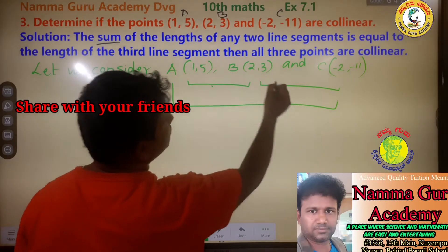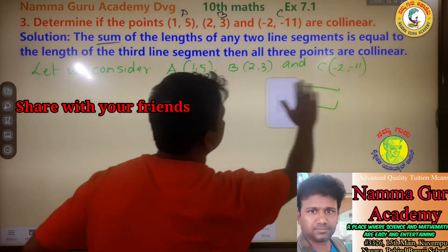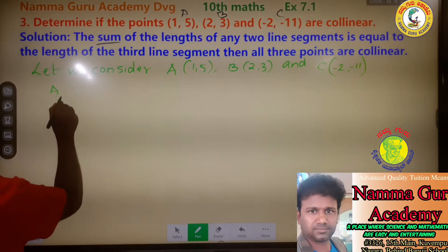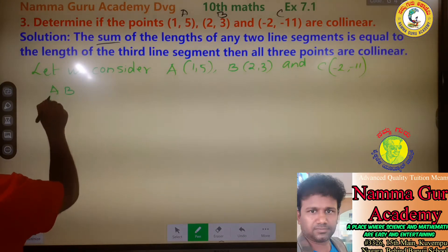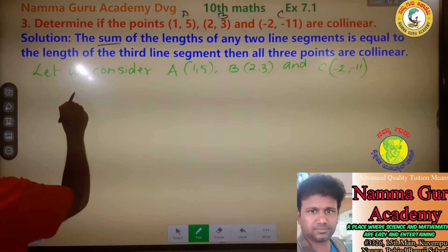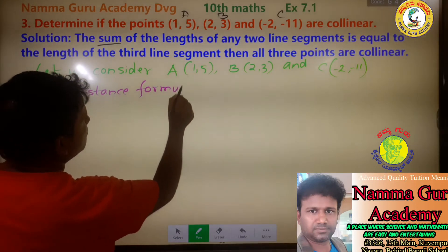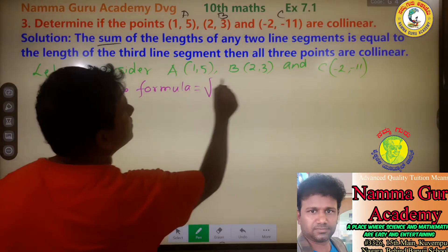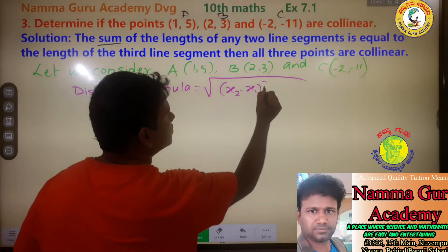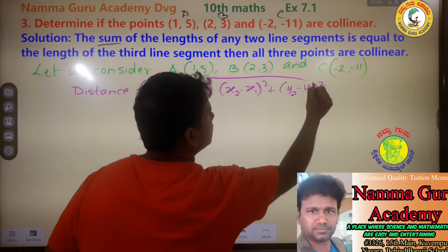We apply the distance formula: distance equals under root of (x2 minus x1) whole square plus (y2 minus y1) whole square.